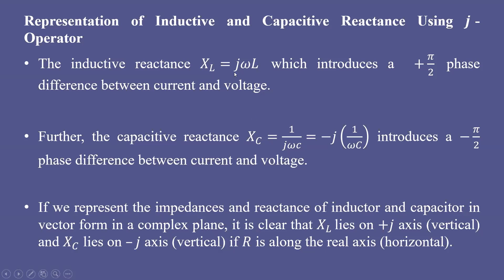In the phasor diagram representing impedance and reactance in a complex plane: X_L lies along the positive vertical axis (+j axis), X_c lies along the negative vertical axis (−j axis), and resistance R lies along the real axis. Resistance introduces no phase difference between voltage and current since current and voltage are in phase for a pure resistor. This is how inductive and capacitive reactance are represented using the J-operator method.